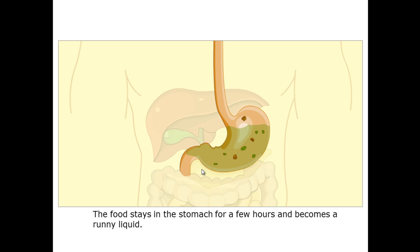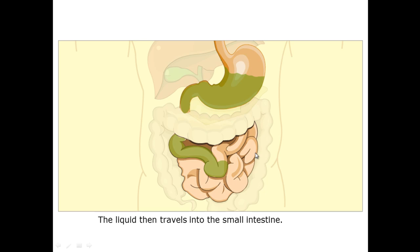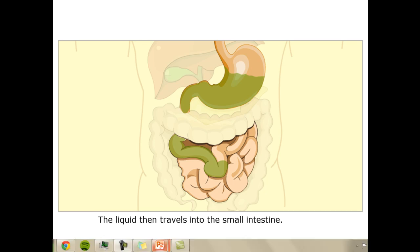After a few hours the sphincter which is keeping the stomach sealed opens up, and this runny liquid runs into the small intestines where the smaller, now digested particles can be absorbed — things such as digested carbohydrates, proteins and fats.